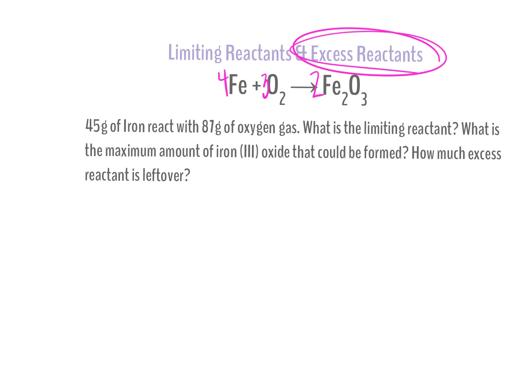So we still have to solve the whole problem first. This question is going to ask us for quite a few things. It says 45 grams of iron react with 87 grams of oxygen gas. It asks us, what is the limiting reactant? So that's just part of the problem that it's asking us for. But it wants us to identify the limiting reactant. Not all questions will ask us to straight up identify the limiting reactant, but it will ask us to draw conclusions based on understanding which one is the limiting reactant.